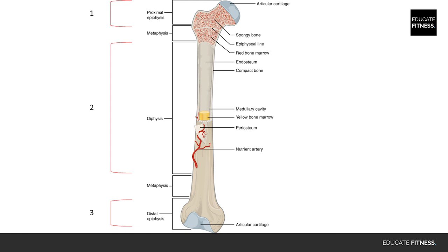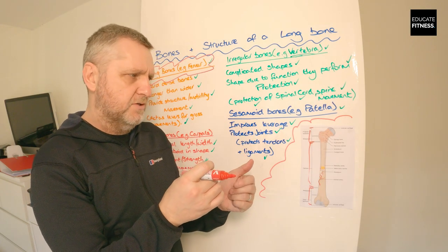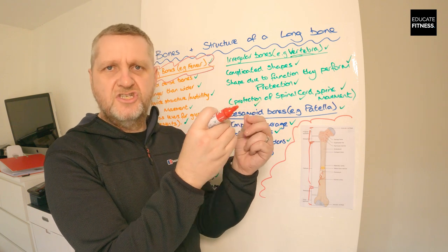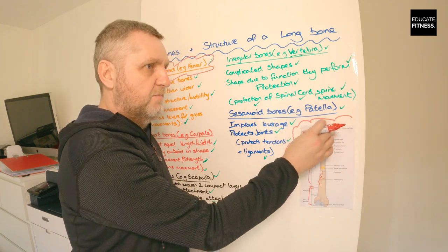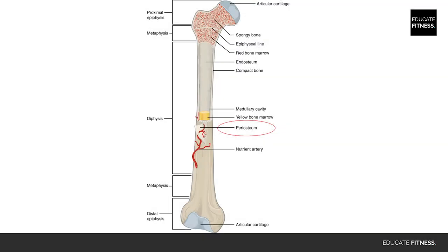Next we've got articular cartilage — the connective tissue that covers the ends of the bones. The main purpose of this cartilage is protection. Next we have the periosteum, which is a tough fibrous sheath that covers the diaphysis of the bone — not the epiphysis. It contains the blood supply that brings nutrients to the bones and removes waste.